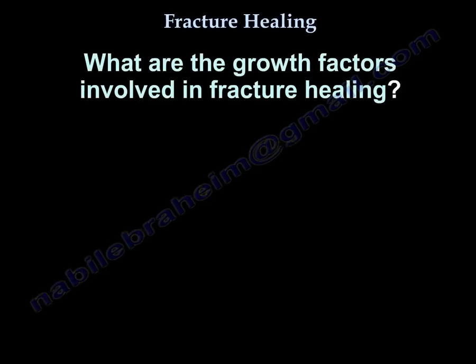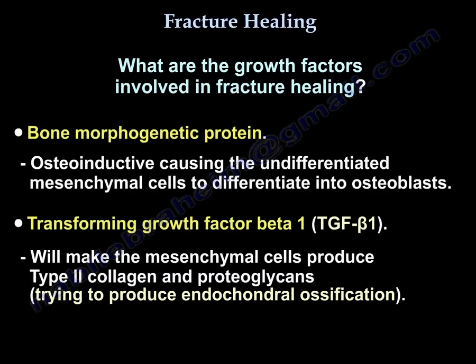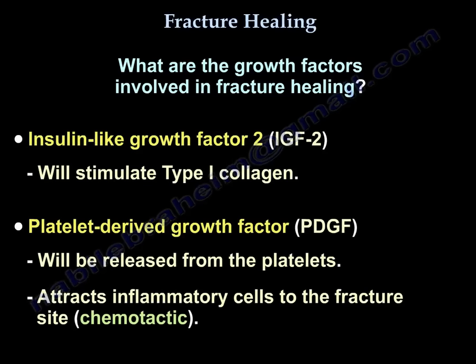What are the growth factors involved in fracture healing? Bone morphogenic protein (BMP) is osteoinductive, causing undifferentiated mesenchymal cells to differentiate into osteoblasts. Transforming growth factor beta-1 makes mesenchymal cells produce type 2 collagen and proteoglycans, promoting endochondral ossification. Insulin-like growth factor 2 stimulates type 1 collagen. Platelet-derived growth factor is released from platelets and attracts inflammatory cells to the fracture site — it is chemotactic.